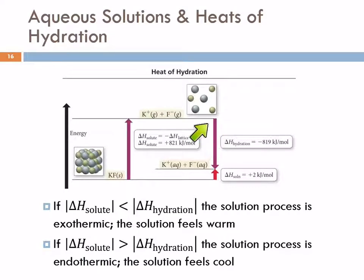Heat of hydration is what happens when we mix those with water and they become an aqueous solution. So this is minus 819 kilojoules per mole. And so overall, the change in enthalpy for the solution is plus 2 kilojoules per mole. We have to put energy in to form this solution.